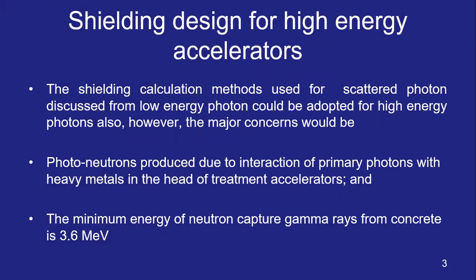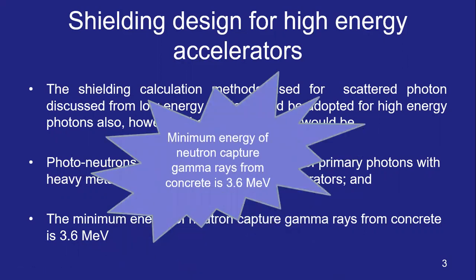The shielding calculation methods used for scattered photons of low energy beams can be adapted for high energy photons. However, there are two additional things to consider. One is photoneutrons produced by interaction of the primary photon with heavy metals in the treatment head of the linear accelerator. Second, these photoneutrons, when passing through concrete barriers, produce neutron capture gamma rays. The minimum energy of these neutron capture gamma rays is 3.6 MeV. The barrier must account for both photoneutrons and neutron capture gamma rays.